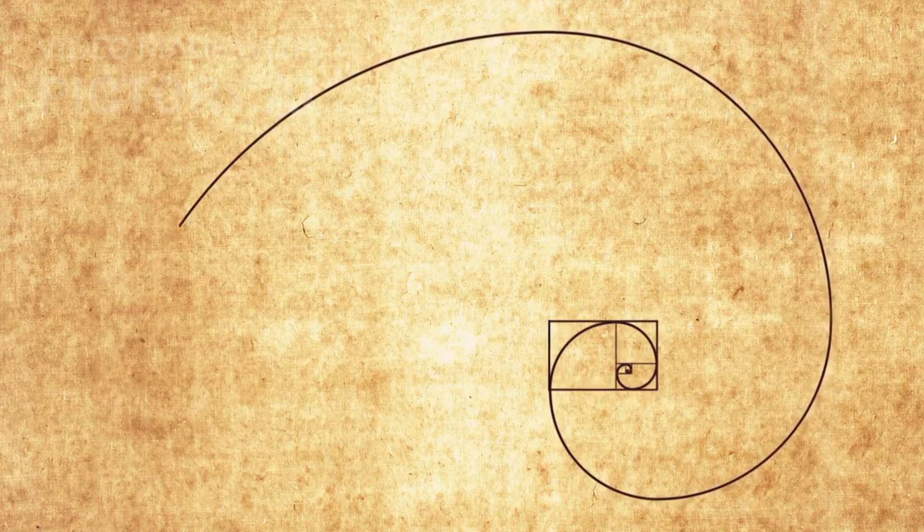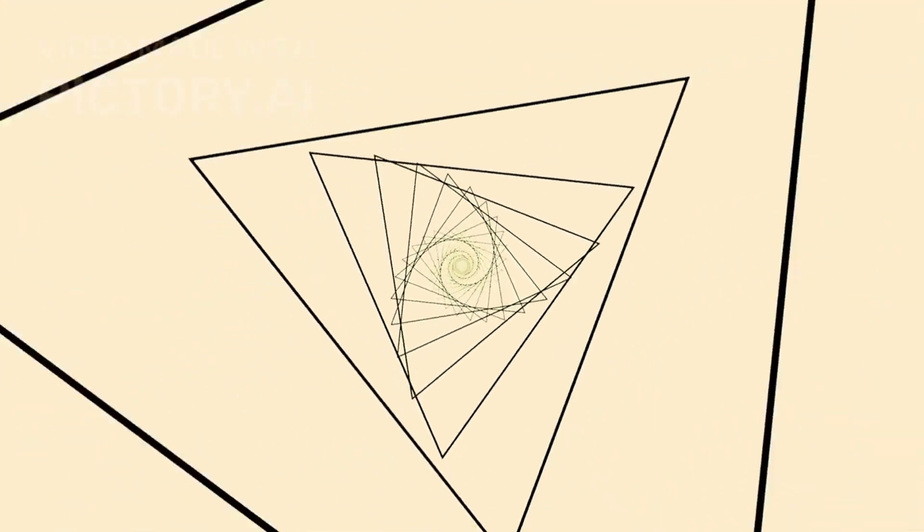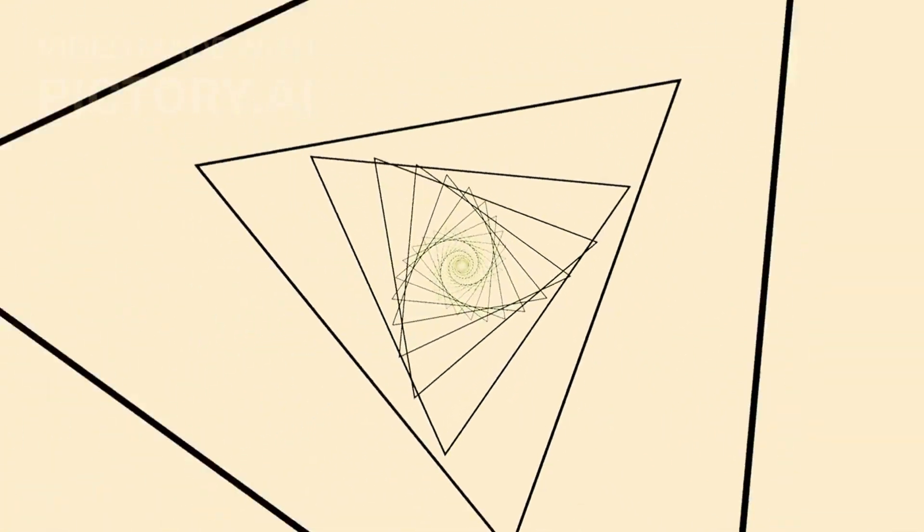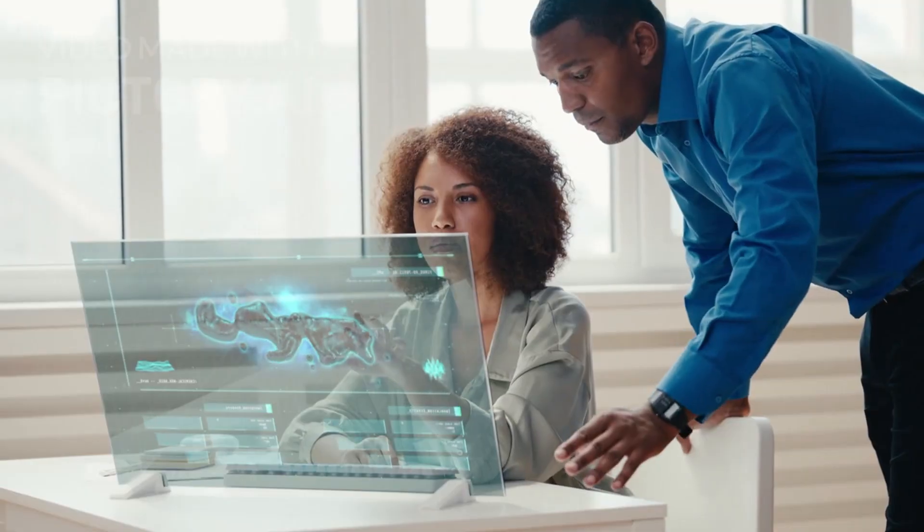Inside the dodecahedron lives the golden ratio. Inside the golden ratio lives nature. And inside nature lives all of us. The universe does not reveal itself to the comfortable. It reveals itself to the curious.